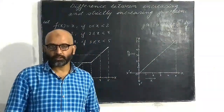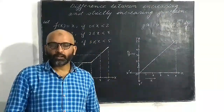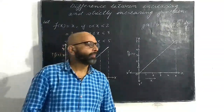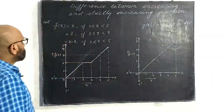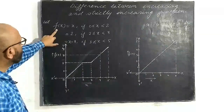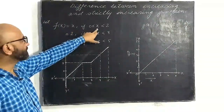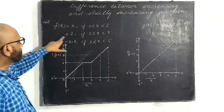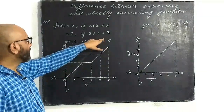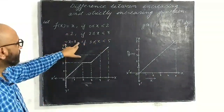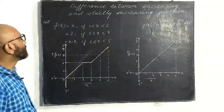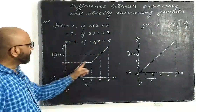We will look at when a function is said to be an increasing function and when it is said to be a strictly increasing function. We have taken two functions. Suppose f is a function defined as: f(x) = x if 0 < x < 2, f(x) = 2 if 2 ≤ x < 3, and f(x) = x − 1 if 3 ≤ x < 5.